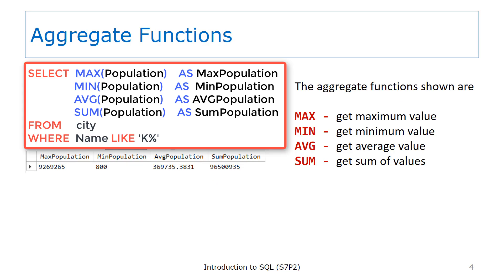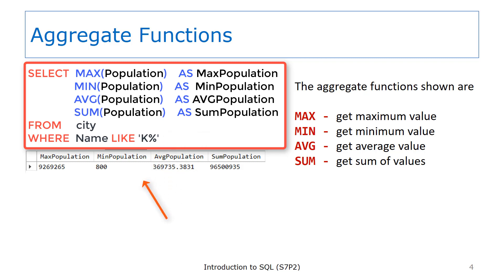Here you see most of the aggregate functions all used on the same SELECT statement. In this example, the functions are all using the same column, population. The functions are used to get the maximum population, the minimum population, the average population, and the sum of all the populations. Keep in mind, all of these aggregate functions apply only to the rows that are selected. In this example, the functions are only applied to the population values for cities that begin with the letter K. As you can see, the aggregate functions are useful to get statistical data from a table.